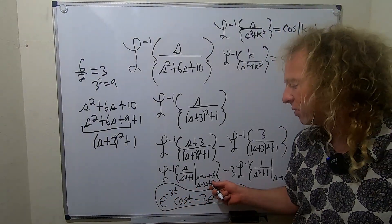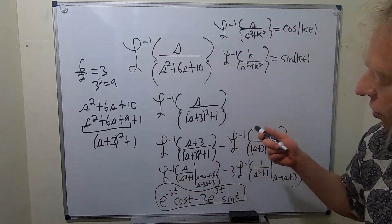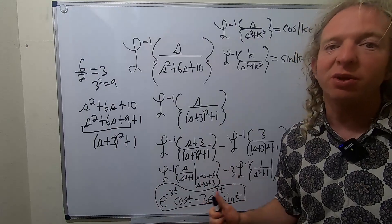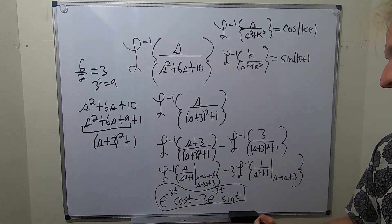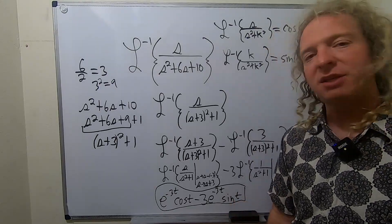If it was like s minus 3, you would just get e to the 3t. Because it's a plus, so it turns into a negative. So the shift always becomes an exponential. That's called the first translation theorem. A lot going on in this problem. Hopefully it made sense. That's it. Take care.